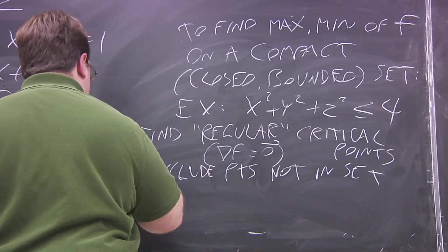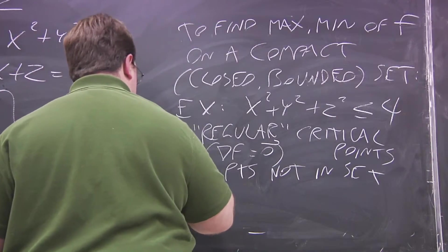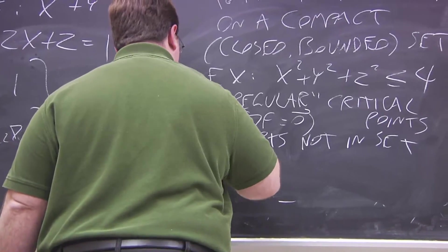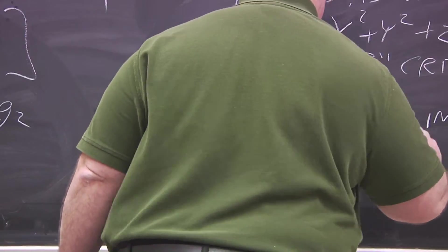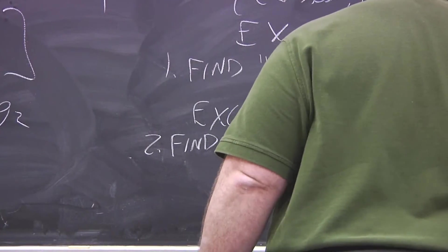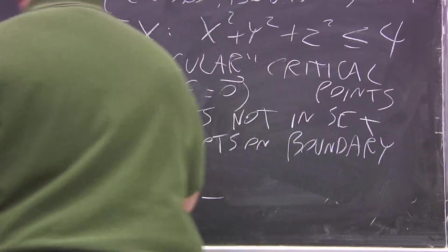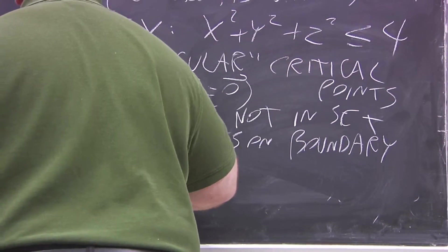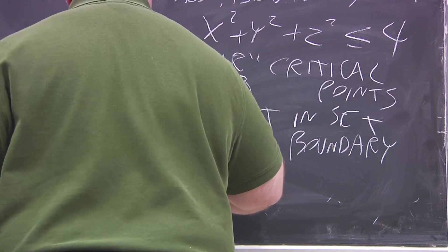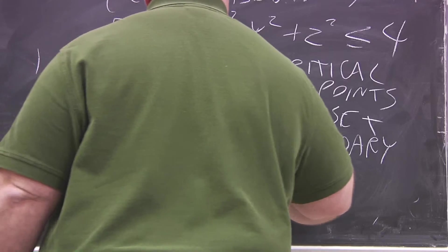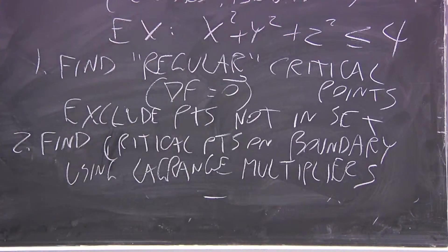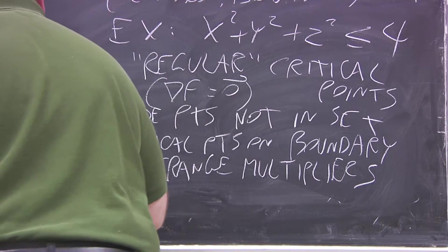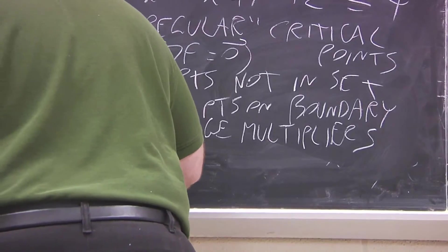Second, you find any critical points on the boundary using LaGrange multipliers. What that means is the boundary gives you your constraints.